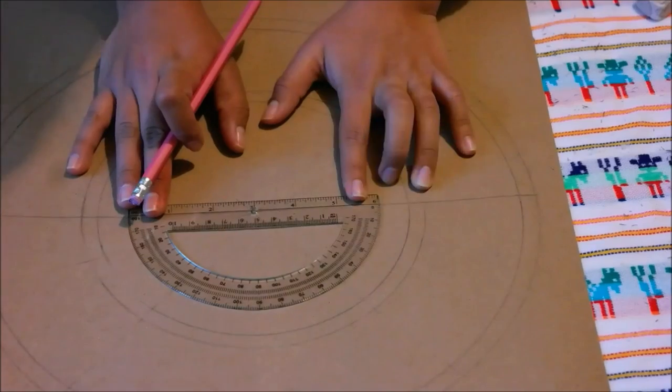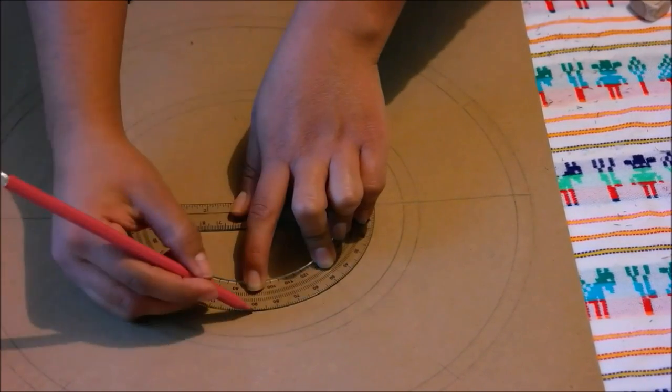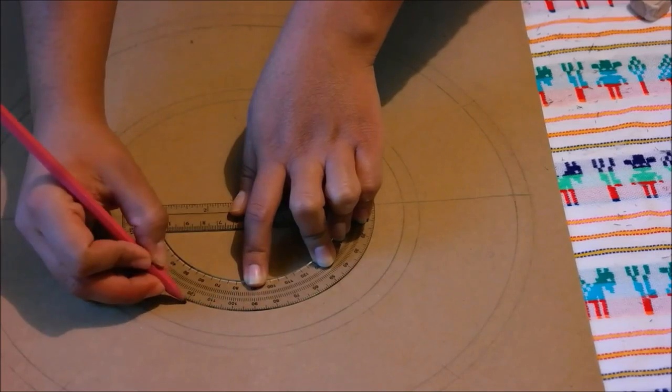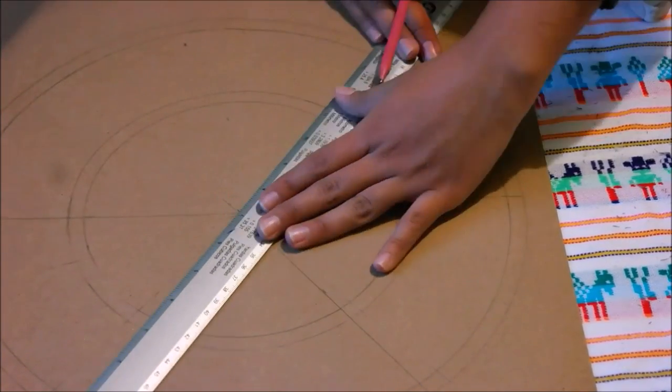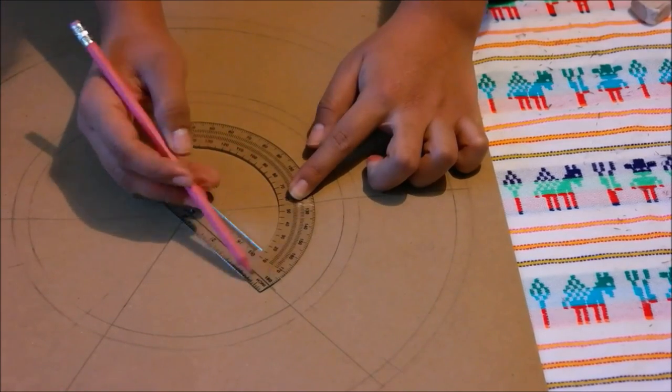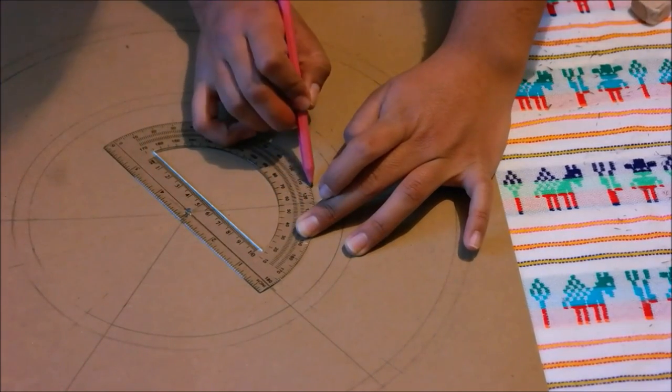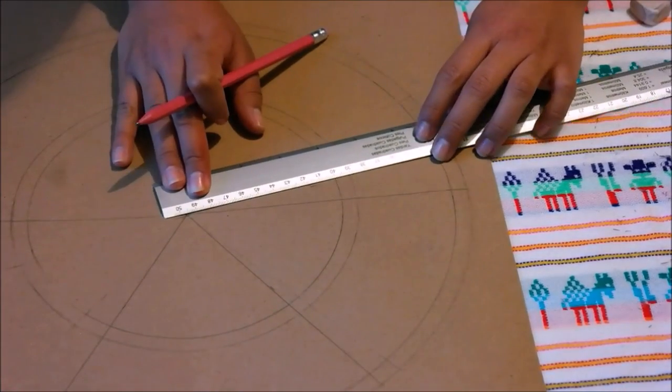Trace the diameter and place your protractor on the center point. Make two marks, one at 120 degrees and the second one at 55 degrees. Connect this mark to the center point. It will look like three cake slices. Place the protractor on the left line that you just draw and mark 65 degrees. Connect that mark to the center too.